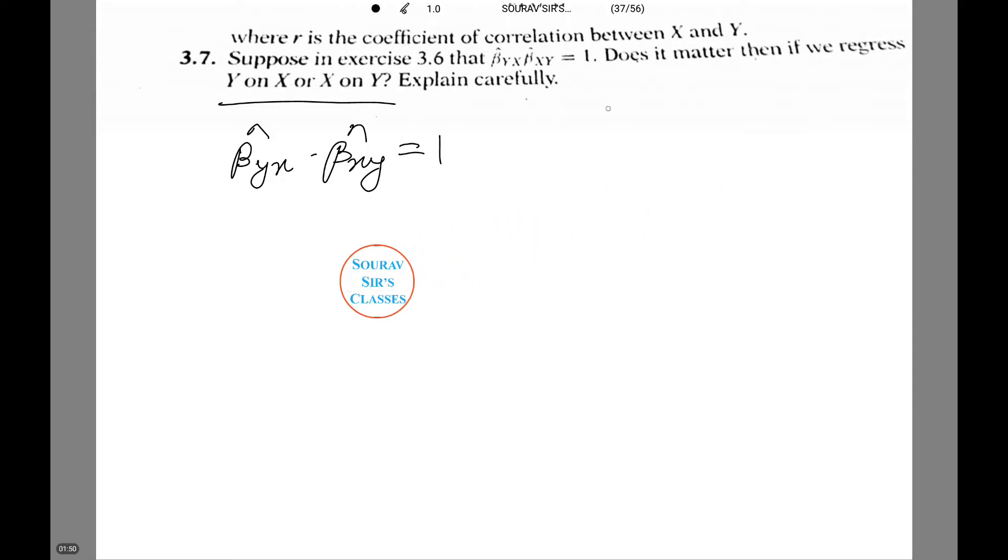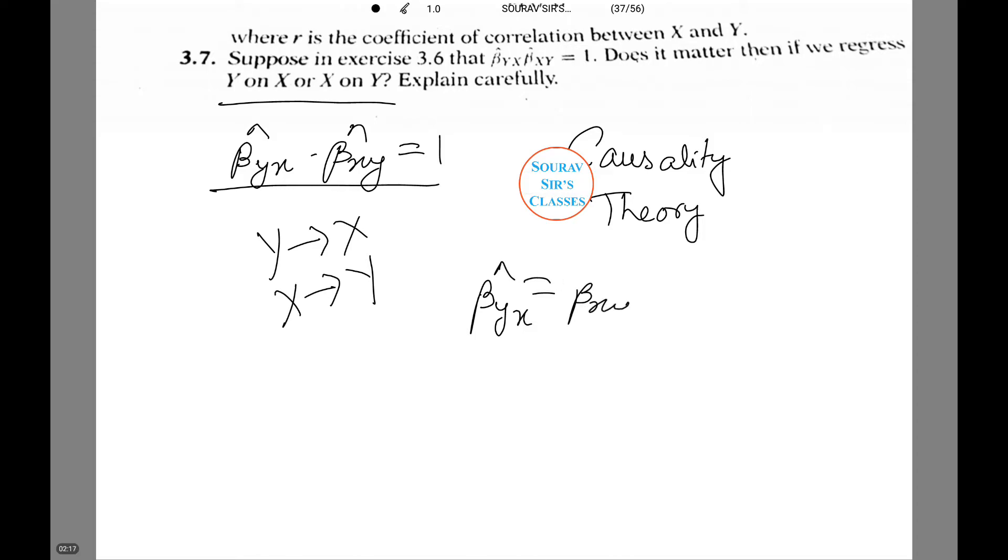Beta y x into beta x y equals to 1. It matters because of causality and theory. If y is regressed on x or x is regressed on y, since it is just the product of the 2 that equals 1, this does not say that beta y x cap equals to beta x y cap.